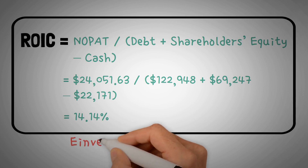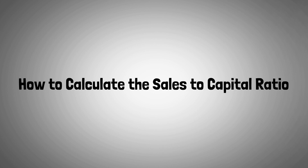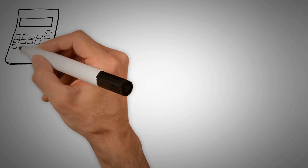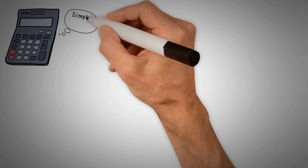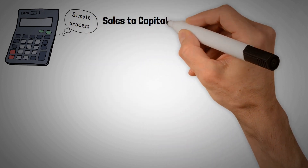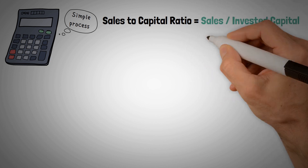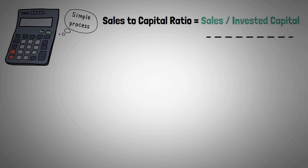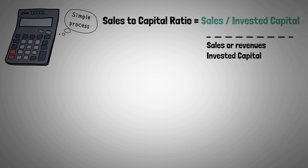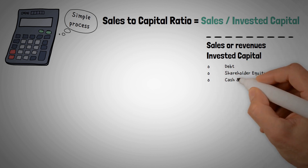For a deeper dive into this metric, please check out our articles at einvestingforbeginners.com. Calculating the sales-to-capital ratio is a simple process. The formula is: Sales-to-Capital Ratio equals sales divided by invested capital, where the inputs are sales or revenues, and invested capital, which includes debt, shareholder equity, and cash and equivalents.